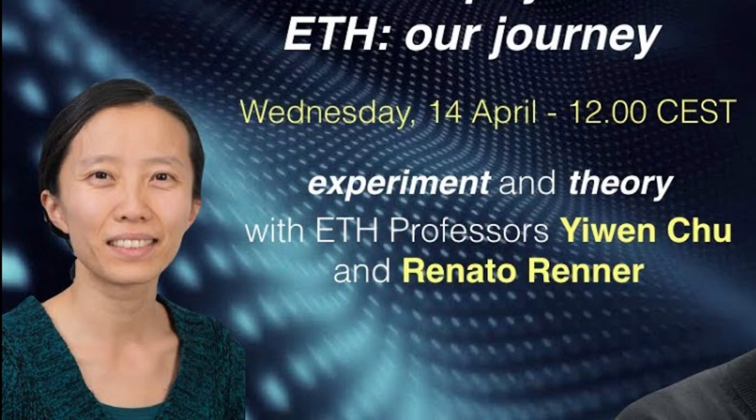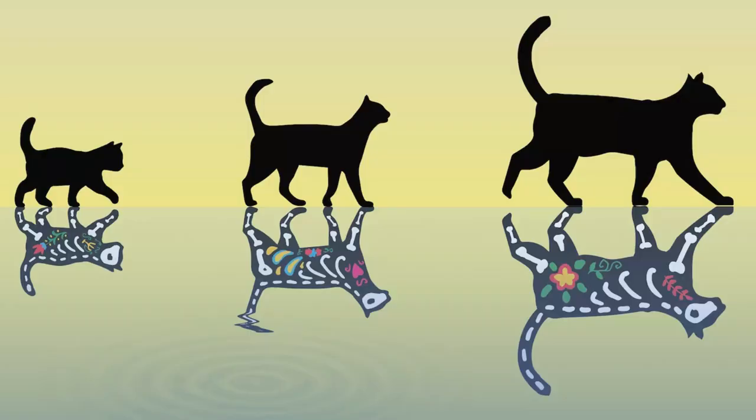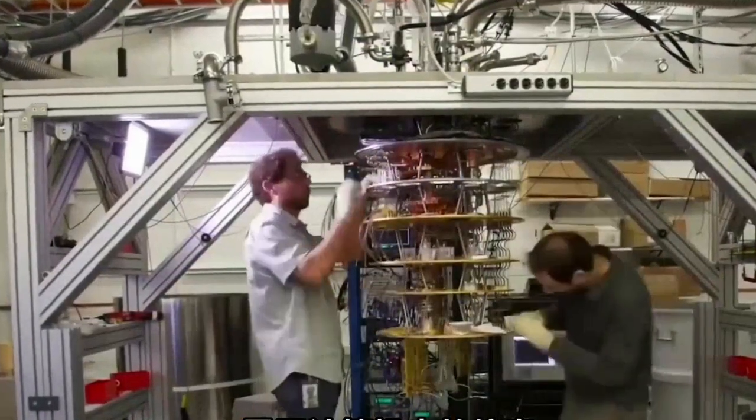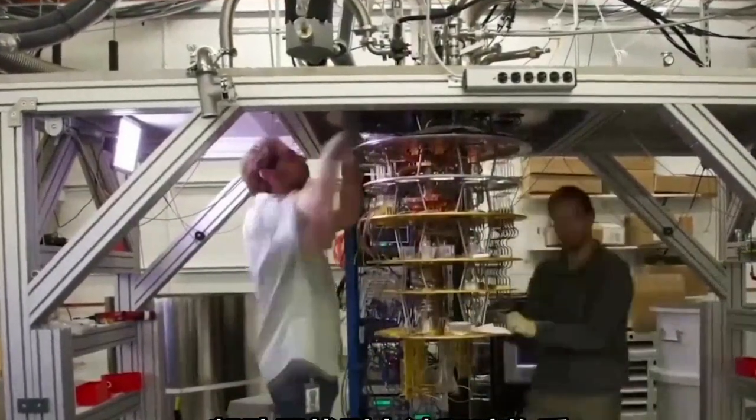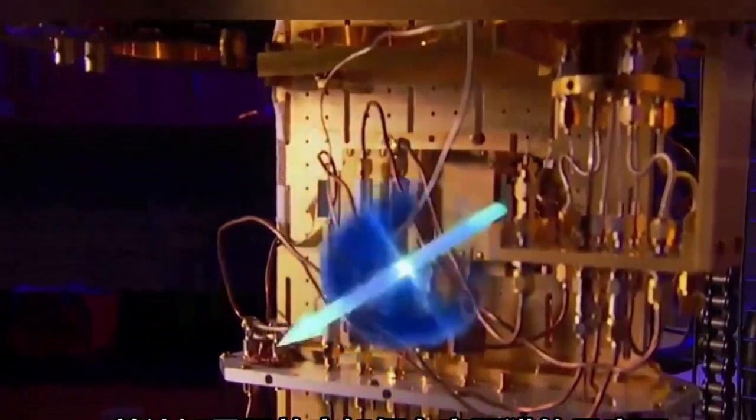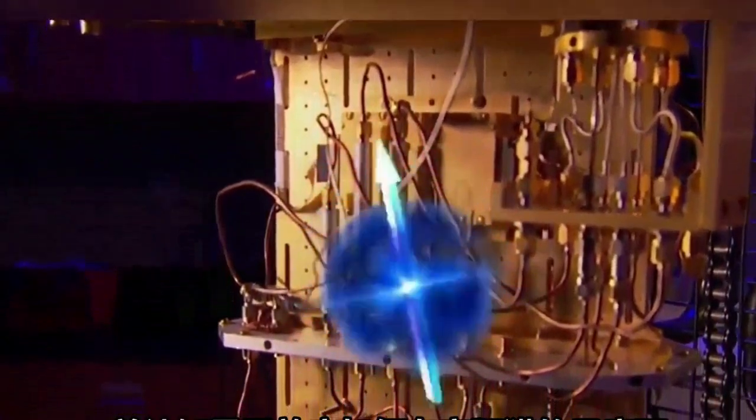In the future, Professor Chu hopes to increase the mass of the Schrödinger's cat crystal even further, creating macroscopic quantum objects that could be used to store information in quantum computers more robustly, look for gravitational waves and dark matter, and figure out how quantum effects disappear at the scale of real cats.